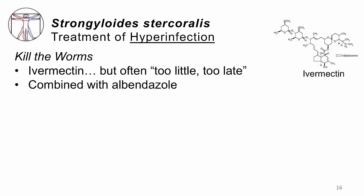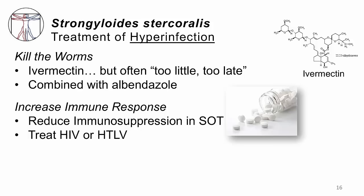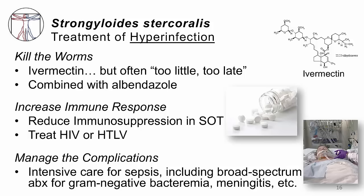In hyperinfection, things are different. We do give ivermectin, but it may be too little too late — these patients often do not respond to therapy. By convention, we'll usually add albendazole on top of ivermectin, not because it reliably works, but because we have very little else to offer. We have to reduce their immune suppression, treat their HIV or HTLV. Most importantly, we have to manage the complications of sepsis — they need the ICU and broad-spectrum antibiotics for gram-negative bacteremia or meningitis. Many of these patients will not survive.